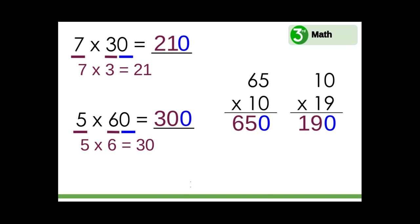Multiplying by tens is similar to multiplying by ones, but instead of multiplying by one cube, you're multiplying by a group of ten or a ten rod. So there's always a zero in the ones place to allow the next number to start in the tens place. You got this!